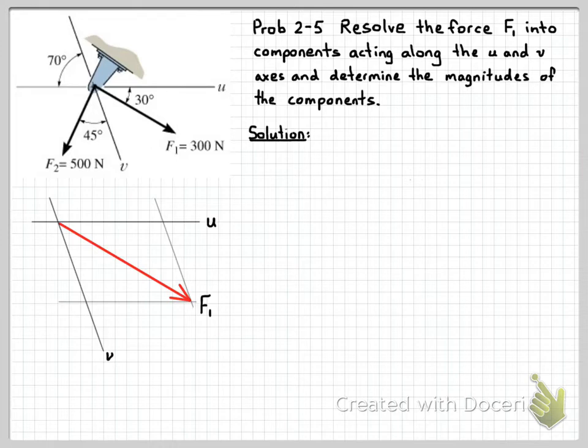We know that the components of a force must add up vectorially to give us the original force. So we would have a component acting along the u direction plus a force component acting along the v direction to add up to give us F1.